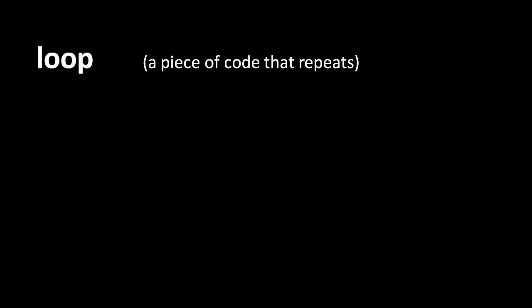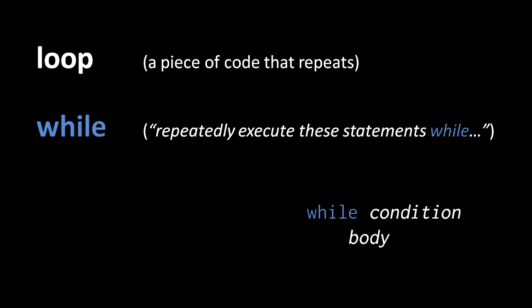Often in code, we want what's called a loop. That is, we want a section of code that repeats some number of times. For this purpose, we have the while statement. A while statement looks very much like an if, with a condition and a body, but with the reserved word while in place of if. The word while was chosen because a while loop has a sense of do this stuff while this condition is true.